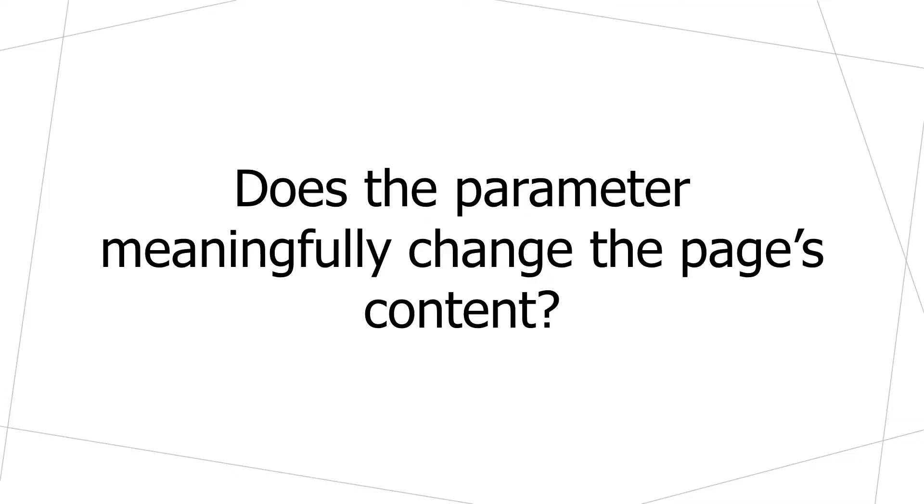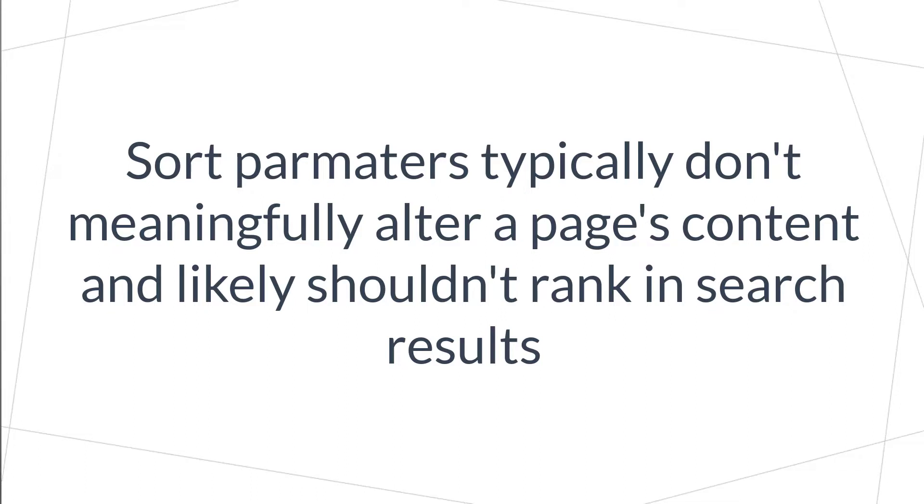There are a few key questions we need to ask about every single parameter. The first question is whether the parameter meaningfully changes the page's content — and the key word is meaningfully. A lot of parameters can alter a website's content at least slightly. What we want to know is if the parameter, when added to the URL, changes the content in a really substantial, meaningful way. For example, a sort parameter sorts a list differently — alphabetically versus reverse alphabetically. Is that really a meaningful difference? It's the same list of items, so we wouldn't necessarily want to find it ranked both alphabetically and reverse alphabetically. One sort is sufficient, so the sort parameter doesn't really add a meaningful difference.